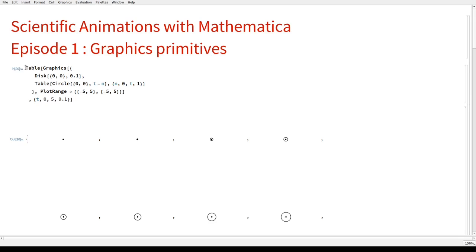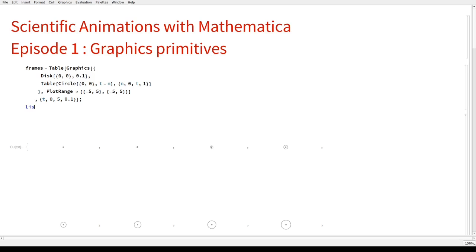Now, this is good as a list of frames, but what we want is an animation. So, first thing that we are going to do is to give a name to these frames. We are going to finish everything with a semicolon that tells Mathematica not to display it. And then we are going to tell Mathematica to display these frames as an animation.